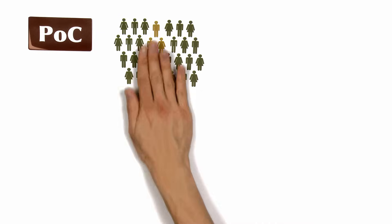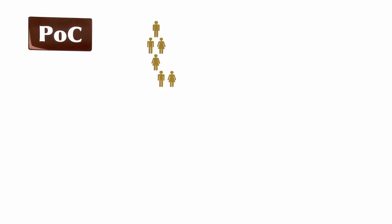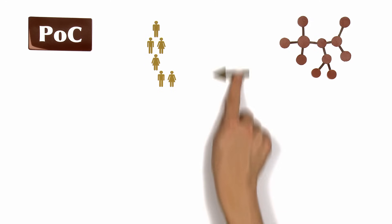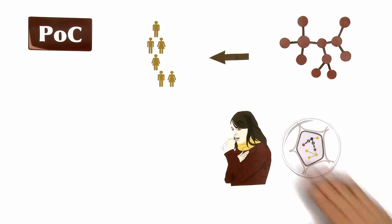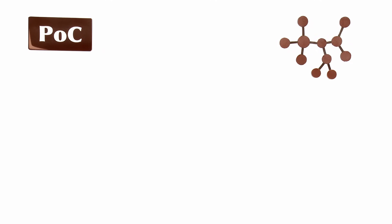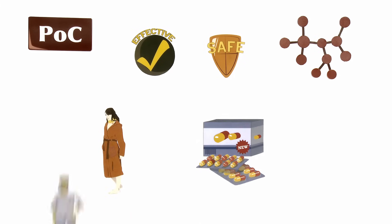Novartis also conducts trials called proof of concept or POC trials, which are often a mix of Phase 1 and Phase 2 studies. A group of well-defined patients is treated with the drug candidate to provide an early indication whether it actually affects the target in the intended way or has a beneficial impact on the disease. These studies allow Novartis to rapidly invest resources on drug compounds which are effective and safe. This way, the appropriate medicines can reach the patients faster.